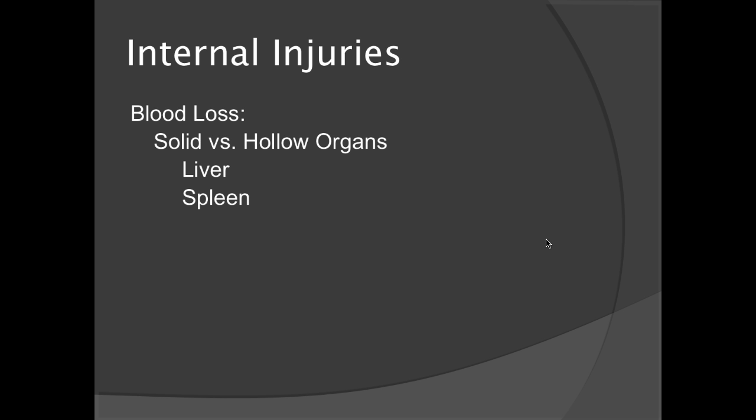Blood loss will occur from internal injuries, both solid and hollow organs. Because your liver and spleen are hollow, they do actually contain a good majority of your red blood cells. So if one of them becomes injured or ruptures, you'll lose blood pretty quickly.